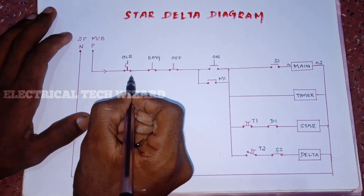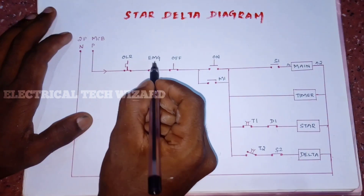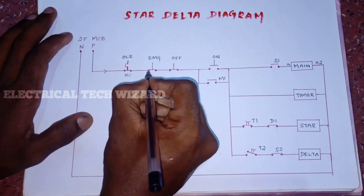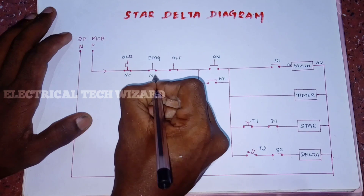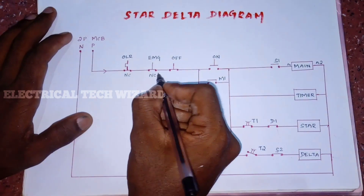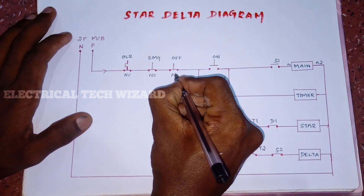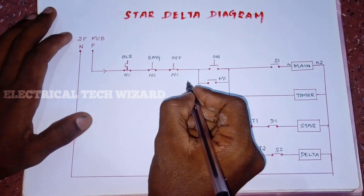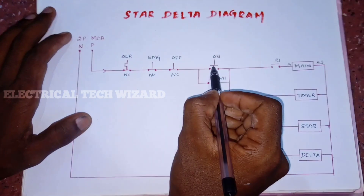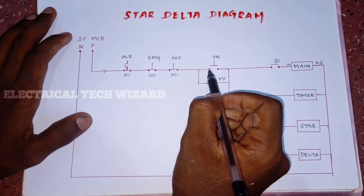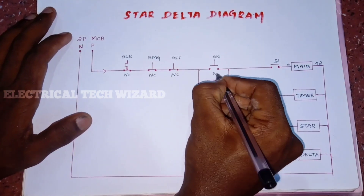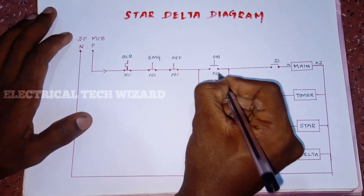We have to go with the star-delta area, first phase supply. We have all the input supply for the NC element. We will connect the output supply on the off button, which is the NO element, which is the input supply.